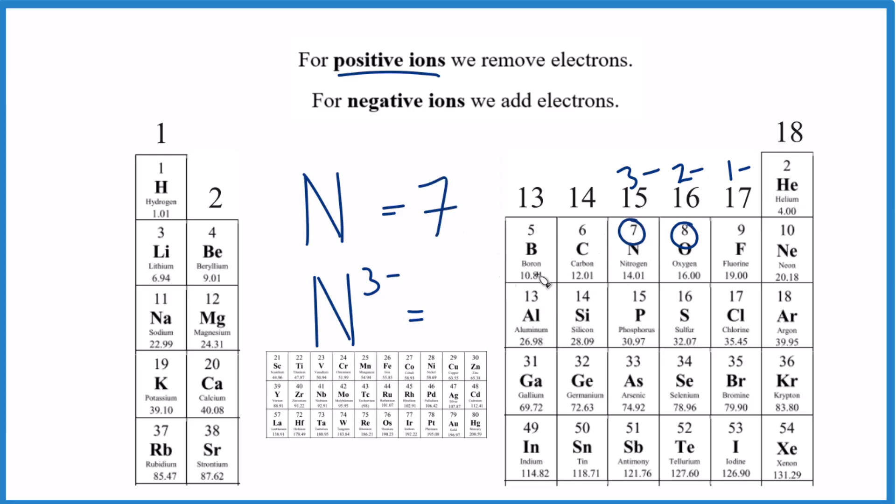Seven plus three, that gives us 10 there as well, just like oxygen. And that's really it. If you have positive ions, you take away electrons. If you have negative ions, you add electrons. And that makes sense. Electrons are negative. So we would add them. That's how you find the number of electrons for atoms and ions.